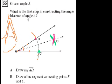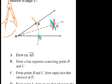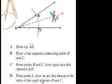So they say, what is the first step in constructing the angle bisector of angle A? Draw ray AD. No, that seems like that would be the last step. Then you're done. Draw a line segment connecting points B and C. No, that's useless. You don't need a line segment. What they have drawn is an arc. From points B and C, draw equal arcs that intersect at D. That was the second step. You have to have points B and C before you can draw those equal arcs. From point A, draw an arc that intersects the side of the angle at points B and C. Yeah, that's what we said. That was the first step. Put your pivot here and use your pencil to draw this arc. And you say, OK, this point and this point. So that would be the first step, D.